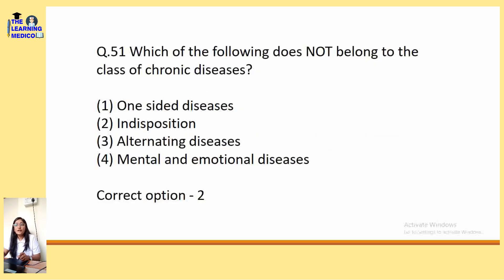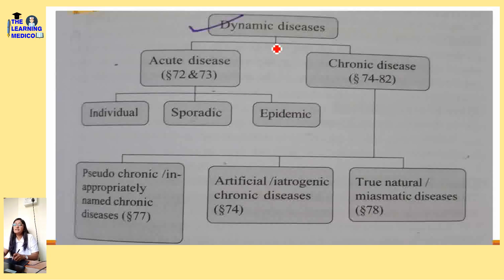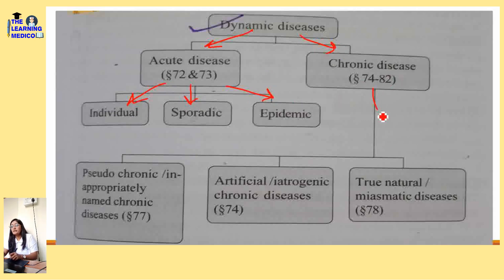Which of the following does not belong to the class of chronic diseases? Options: one-sided diseases, alternating diseases, mental diseases, indisposition. The correct option is indisposition. Dynamic diseases are divided into acute and chronic diseases. Acute diseases are divided into individual, sporadic, and epidemic. Chronic diseases are divided into true natural chronic disease, artificial chronic disease, and pseudo chronic disease.